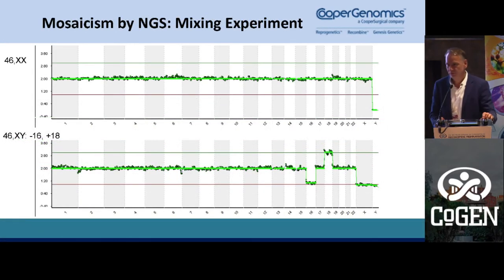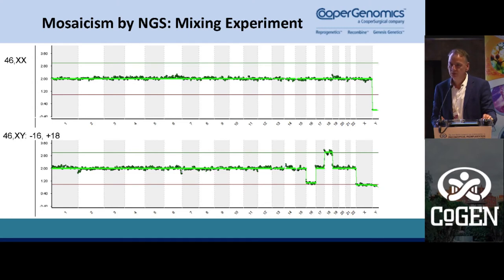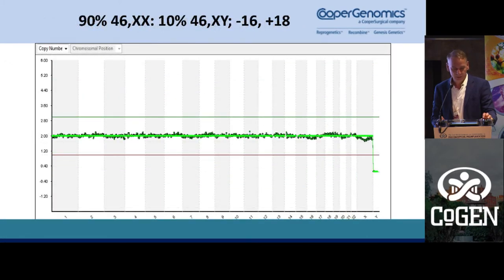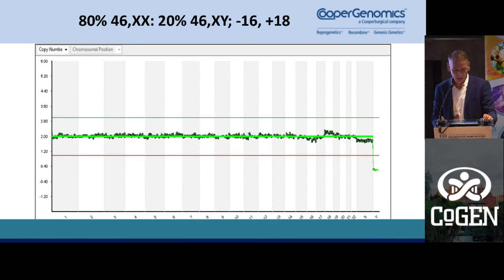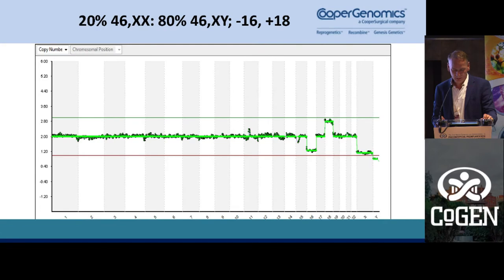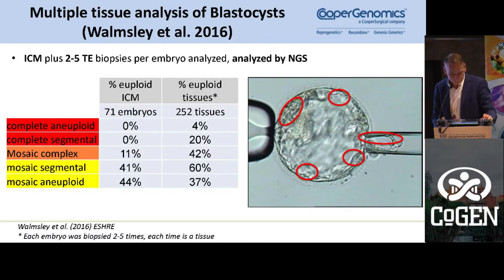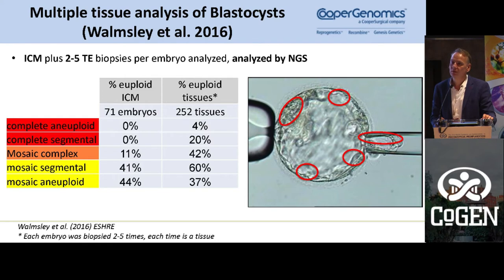To further validate, we mixed two different samples — one normal and one abnormal — in different ratios. We had a cell line with monosomy 16 and trisomy 18 and mixed them in ratios from 90/10 to 10/90. At 90/10 you cannot distinguish them at all, but you start to be able to distinguish at 20%, 30%, 40%, 50%, and so on up to 100%. We also compared different areas of the blastocyst — the inner cell mass and different areas of the trophectoderm — to see if there is correlation between the two tissues.